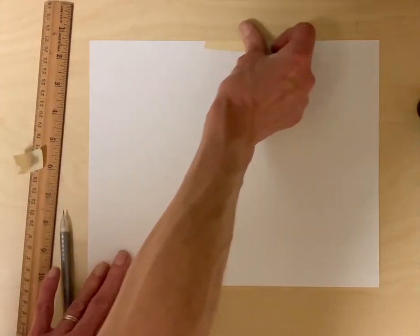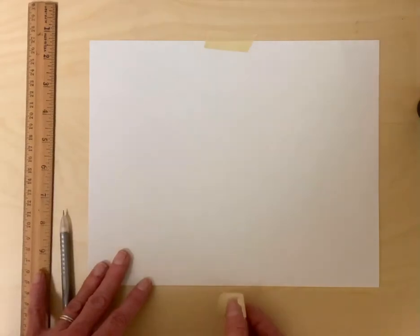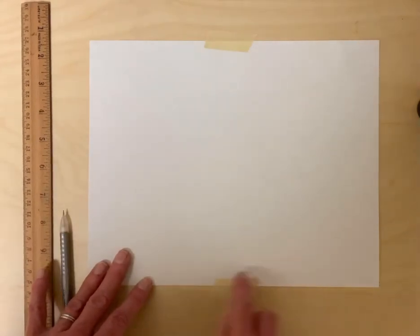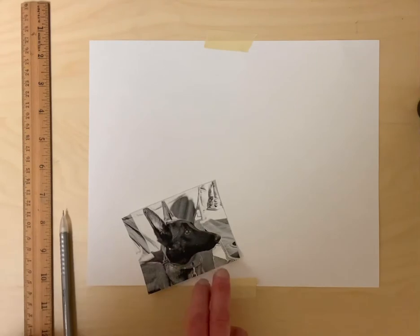So first thing I'm going to do is just put a little piece of tape here and here, and I'm doing that so my paper doesn't slide around. It just makes it go faster.